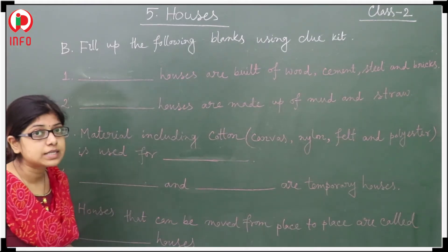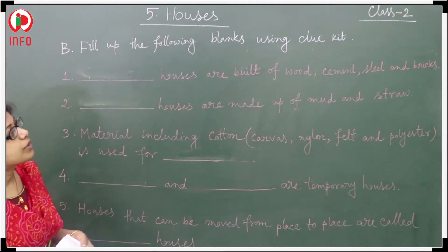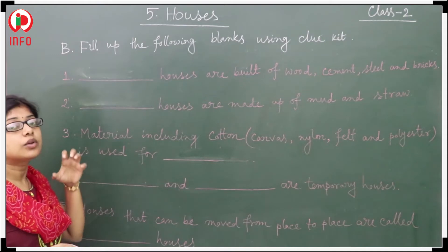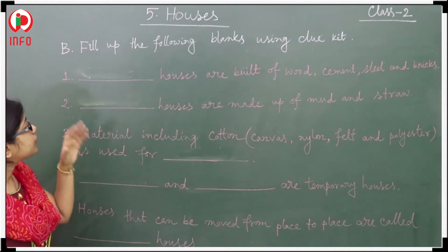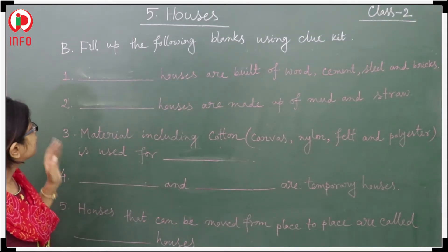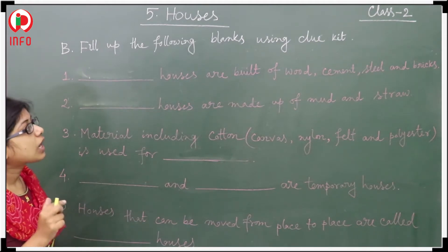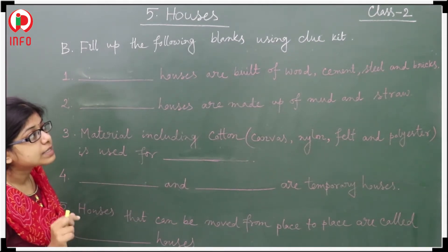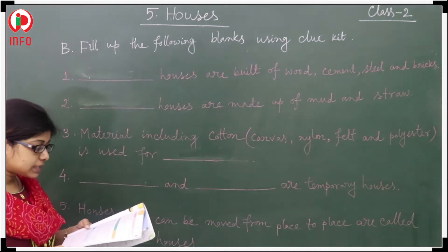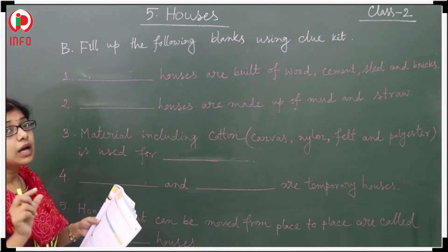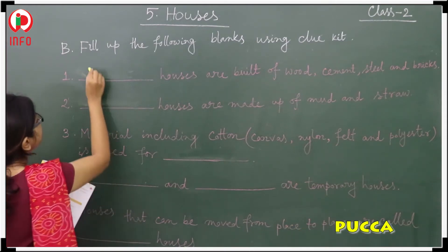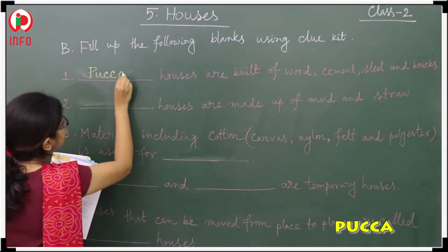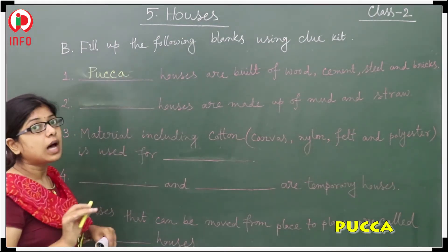Now we are going to fill in the blanks using the clue kit. Fill up the following blanks. First one: dash houses are built of wood, cement, steel, and bricks. The answer should be the pucca house — P-U-C-C-A. Pucca house is the answer.